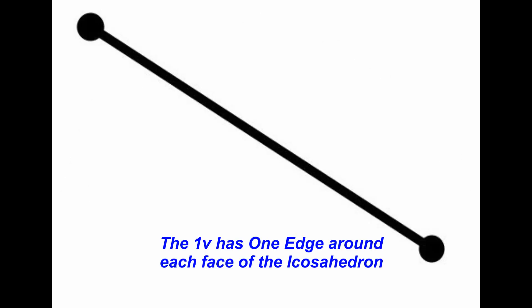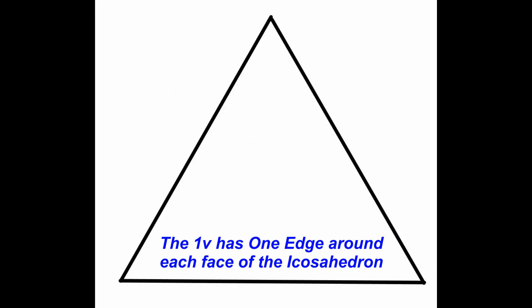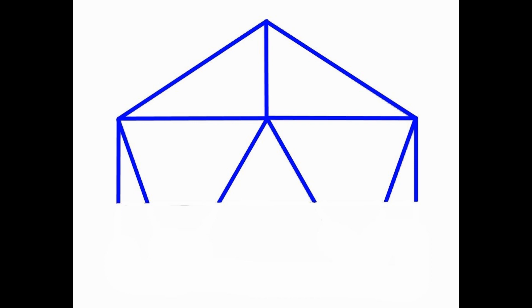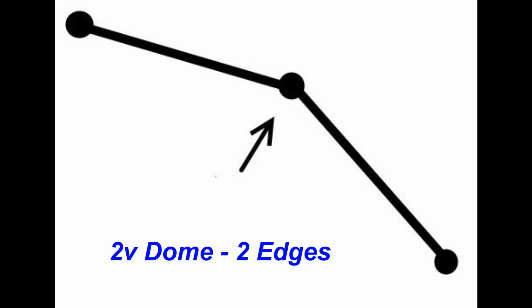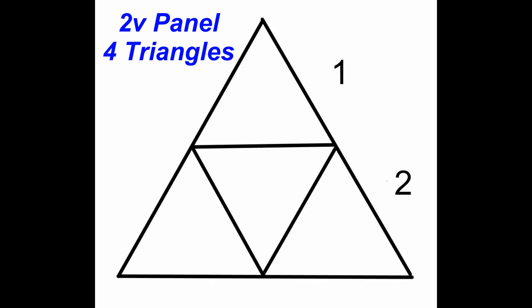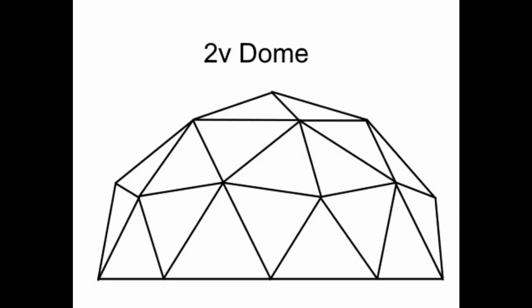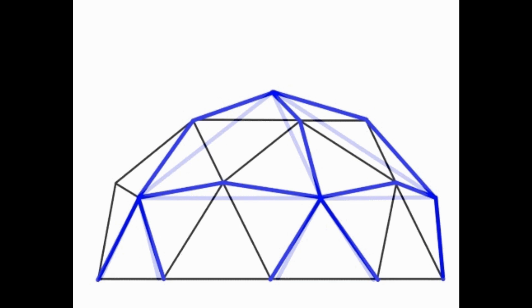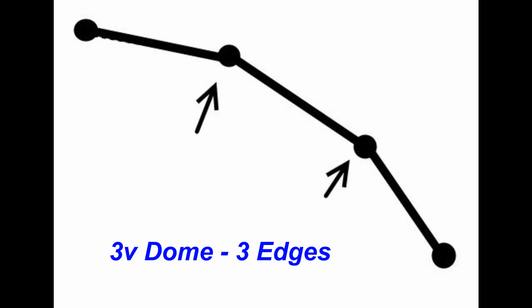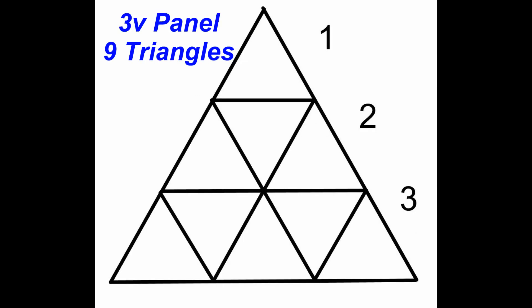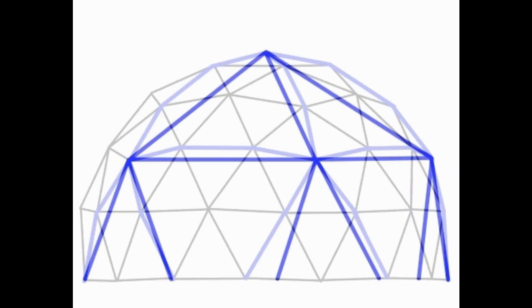A 1 frequency dome has 1 edge around the face of the original icosahedron, so a 1 frequency dome is essentially an icosahedron. A 2 frequency dome has 2 edges for each edge of the original icosahedron, with a new vertex and edges pushed outward, creating 4 triangles from each original icosahedron triangle. A 3 frequency dome has 3 edges for each edge of the original icosahedron, with 2 new vertices and edges pushed outward, creating 9 triangles from each original icosahedron triangle.